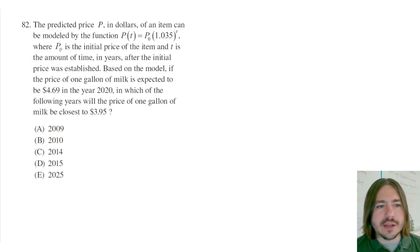Where p₀, which is how you read this p with a little 0 subscript, p₀ is the initial price of the item, and t is the amount of time in years after the initial price was established. Based on the model, if the price of one gallon of milk is expected to be $4.69 in the year 2020, in which of the following years will the price of one gallon of milk be closest to $3.95?